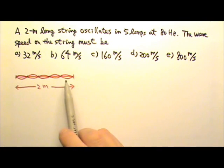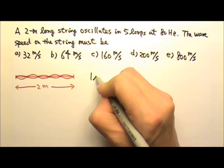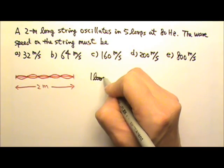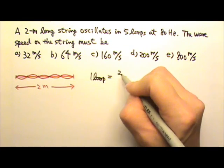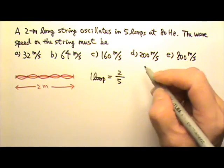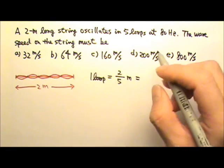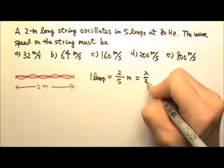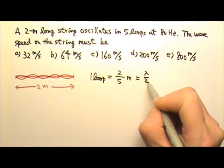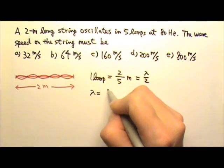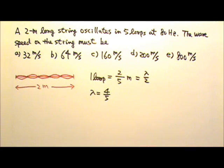The string is two meters long and there are five loops. That means the length of one loop is two meters divided by five, two-fifths of a meter. And the length of one loop is always half a wavelength. So, if I multiply by two on both sides, I get the wavelength which is four-fifths of a meter.